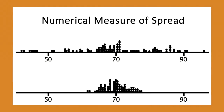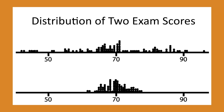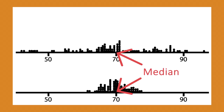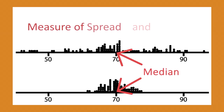Our goal is to describe the distribution. Consider two distributions of exam scores both centered at 70 with a mean of approximately 70 — but they are quite different. The first has much larger variability than the second. To fully describe a distribution, we need to supplement the graphical display not only with a measure of center but also with a measure of variability or spread.